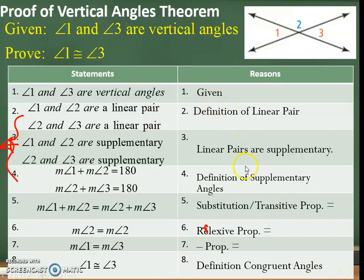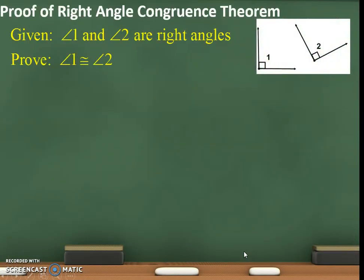I passed out a paper for these while you were working on the flip grid — it says chapter 1 and 2 theorems and postulates. You need to look at that, but I can give you another one when you come back from the long weekend. Now let's take a look at the proof of the right angle congruence theorem. Given: angle 1 and 2 are right angles. Prove: angle 1 and 2 are congruent.